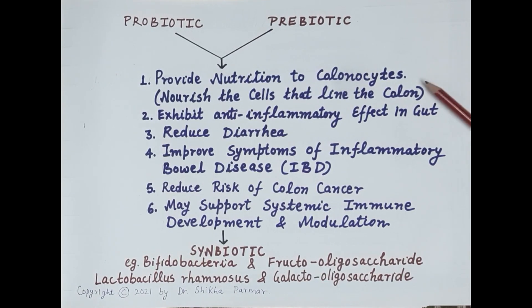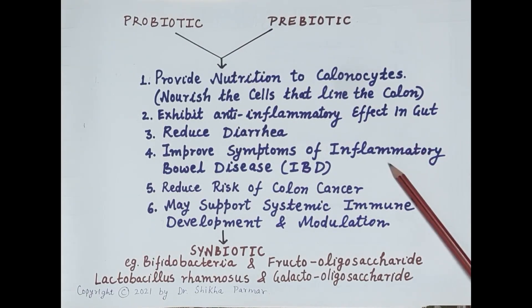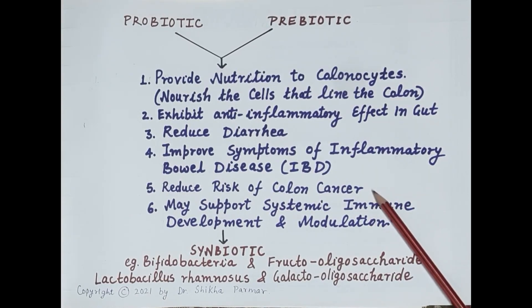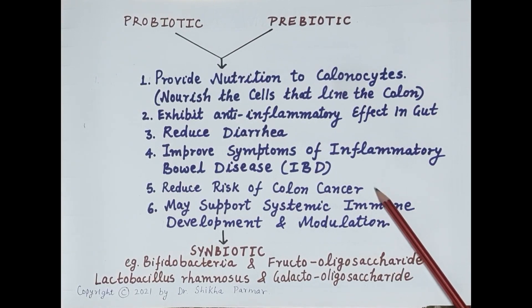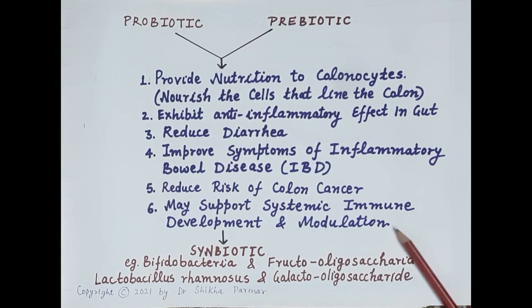Symbiotics provide nutrition to colonocytes — the cells of the colon. They exhibit an anti-inflammatory effect in the gut, reduce the incidence of diarrhea, and improve symptoms of inflammatory bowel disease. Since they strengthen immunity of the GIT, they reduce the risk of colon cancer. They may also support systemic immune development and modulation, meaning they may improve overall immunity of the body. This concludes our discussion on probiotics, prebiotics, and symbiotics.